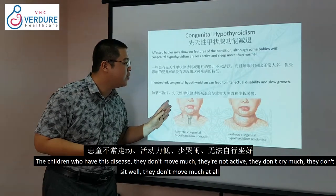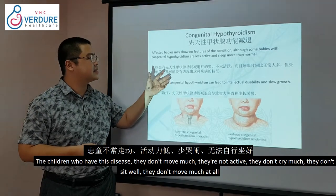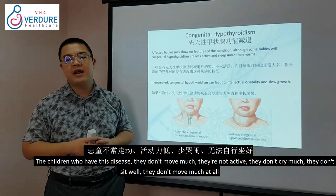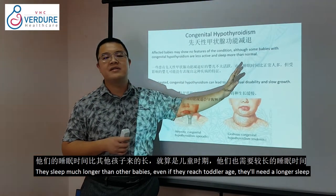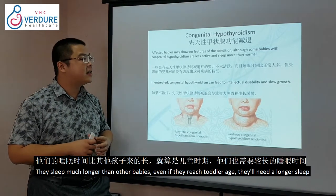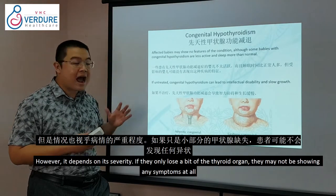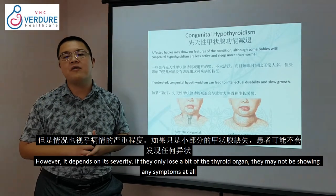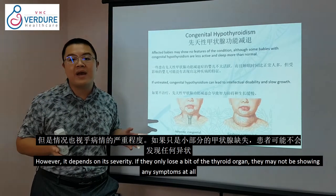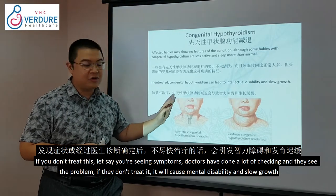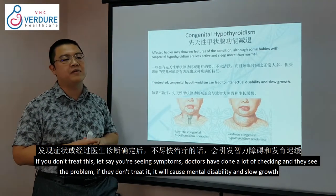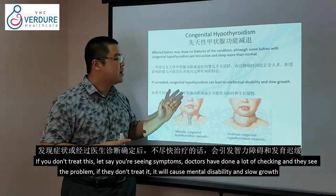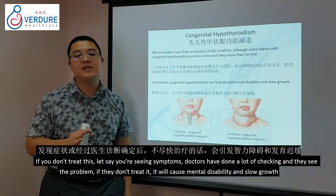Children with this disease don't move much, are not very active, don't cry much, don't sit well, and sleep much longer than other babies — even into toddler age. It depends on severity; if only a little thyroid tissue is lost, they may show no symptoms at all. If untreated, it will cause intellectual disability and slow growth.